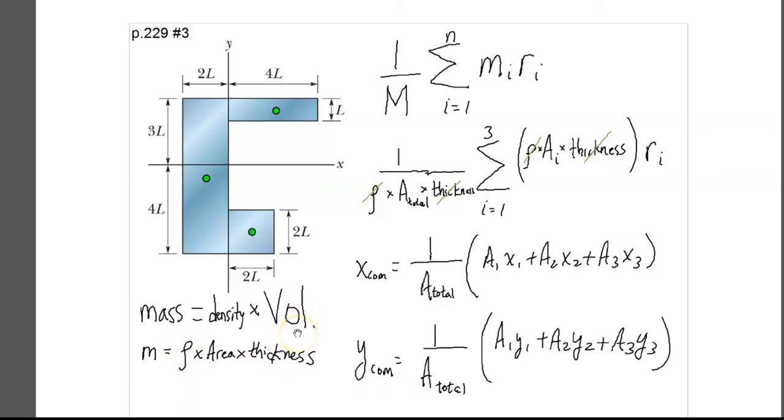And then the volume of some three-dimensional object is the area times the thickness. And what we're going to find is that when we use thickness in the total mass, and when we use thickness in the mass of each piece, those thicknesses cancel. So you can see here the total mass is density times the total area times the thickness, and the mass of each piece is density times the area of each piece times thickness.